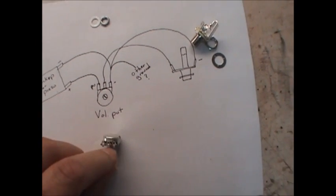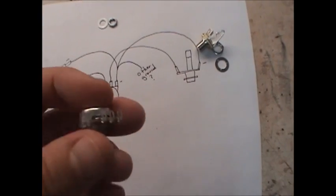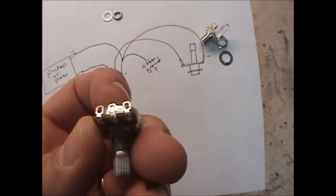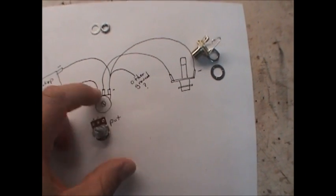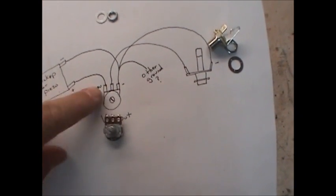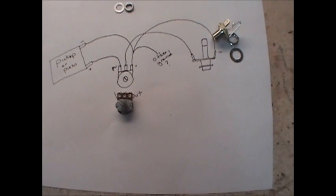the little tabs here. We're going to tin those. So the diagram shows us looking at the pot, so it would be like that. Let's tin those tabs.